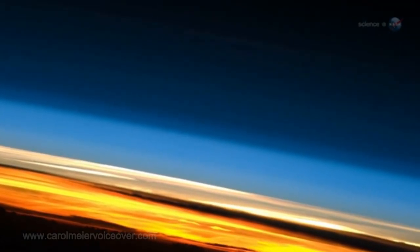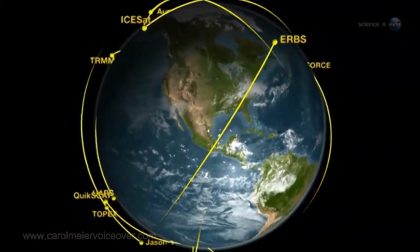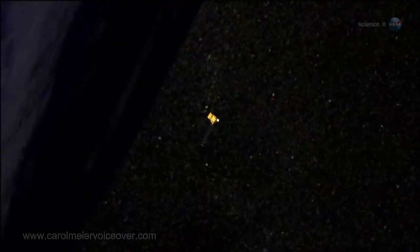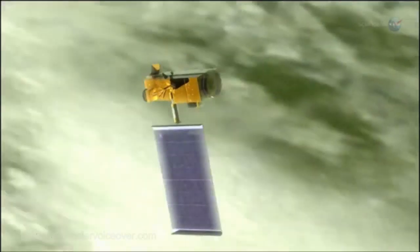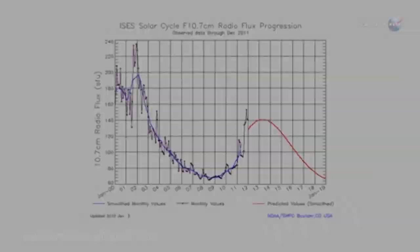During the heating impulse, the thermosphere puffed up like a marshmallow held over a campfire, temporarily increasing the drag on low-orbiting satellites. This is both good and bad. On one hand, extra drag helps clear space junk out of Earth orbit. On the other hand, it decreases the lifetime of useful satellites by bringing them closer to the day of re-entry.